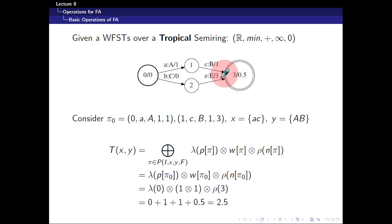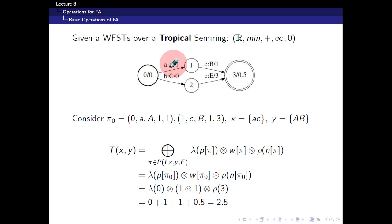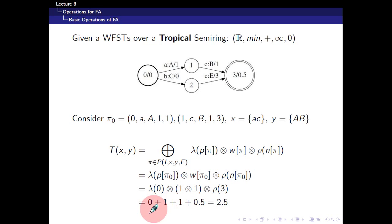To find the weight, we identify the weight of this path and multiply it with the weight of the initial state and the weight of the final state. The weight of the path is 1 times 1. Over a tropical semi-ring, multiplication is just addition, so 1 times 1 equals 2. We add the initial weight lambda(0) = 0 and final weight rho(3) = 0.5. So: 0 plus 1 plus 1 plus 0.5 equals 2.5.